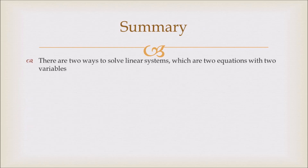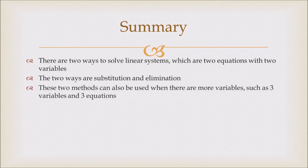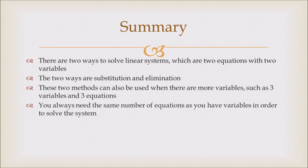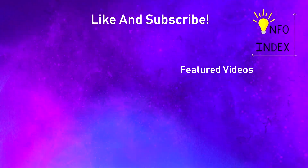Now as a summary, there are two ways to solve linear systems, which are two equations with two variables. The two ways are substitution and elimination. These two methods can also be used when there are more variables, such as three variables and three equations, but you always need the same number of equations as you have variables in order to solve the system. I hope you all learned a lot from this video. Thank you for watching and remember to like and subscribe for more new content.